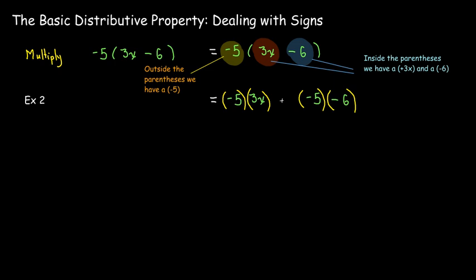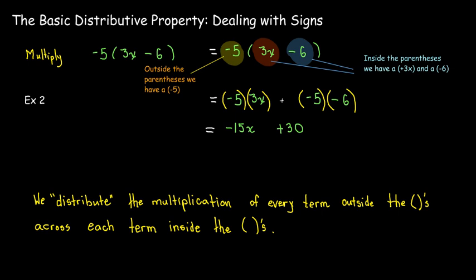A negative 5 times a negative 6 will be a positive 30. In the end, we'll be doing a lot of this multiplication mentally, and we'll be able to go straight to writing negative 15x positive 30, or negative 15x plus 30, where the sign takes care of itself. So again, we've distributed this negative 5 as a term across the positive 3x and negative 6.